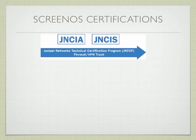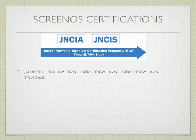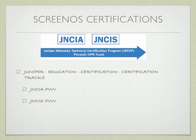The second part of this module covers the ScreenOS certifications. Juniper has two ScreenOS certifications: the JNCIA and the JNCIS, which stand for Juniper Networks Certified Internet Associate and Certified Internet Specialist. The associate exam is supported by this course — this course material covers everything in the associate level exam. There are additional courses available for the specialist exam, which has more advanced features. The certification track is not necessarily progressive; you can take the JNCIS without having had the JNCIA, but it is the more advanced of the two exams.